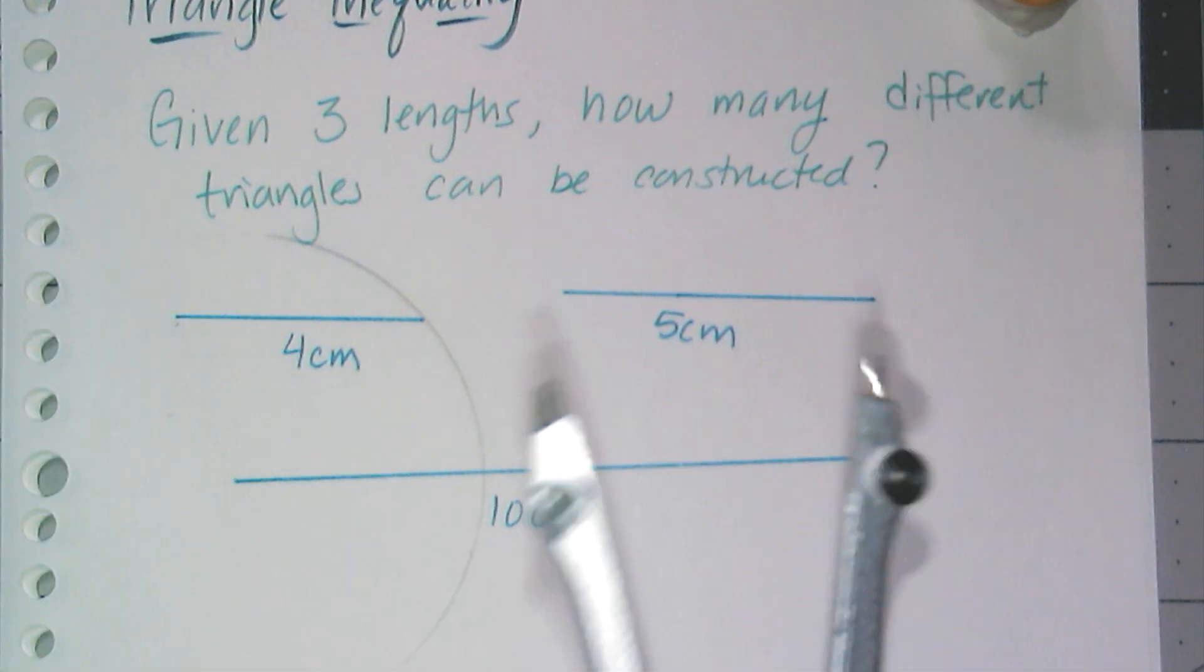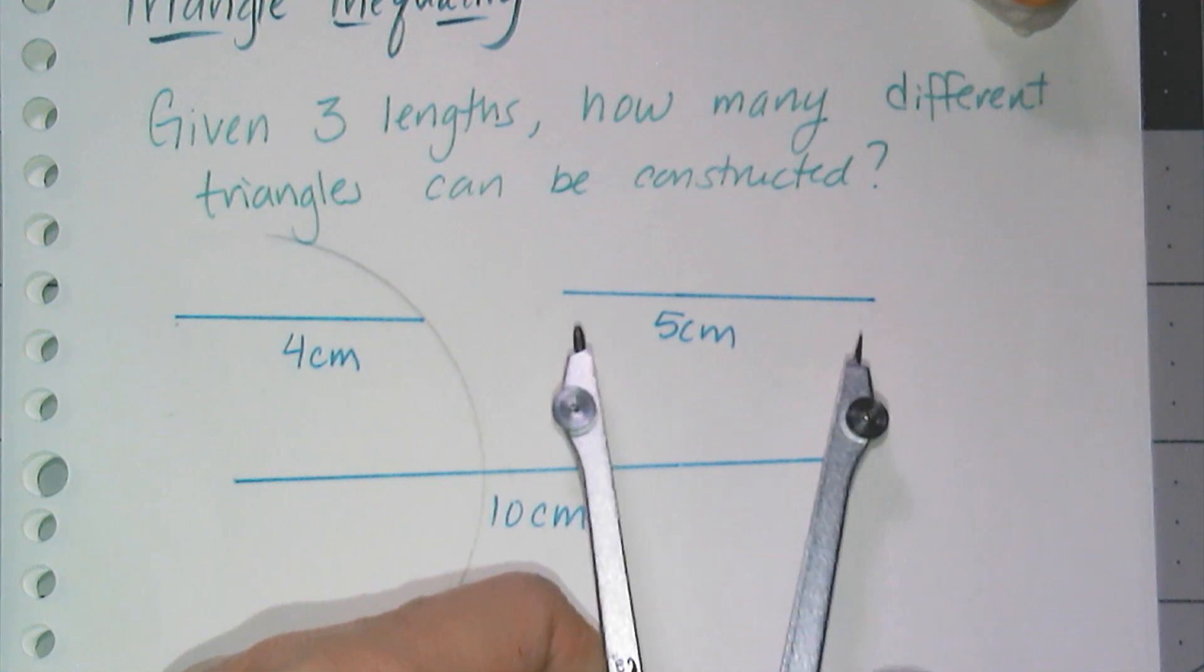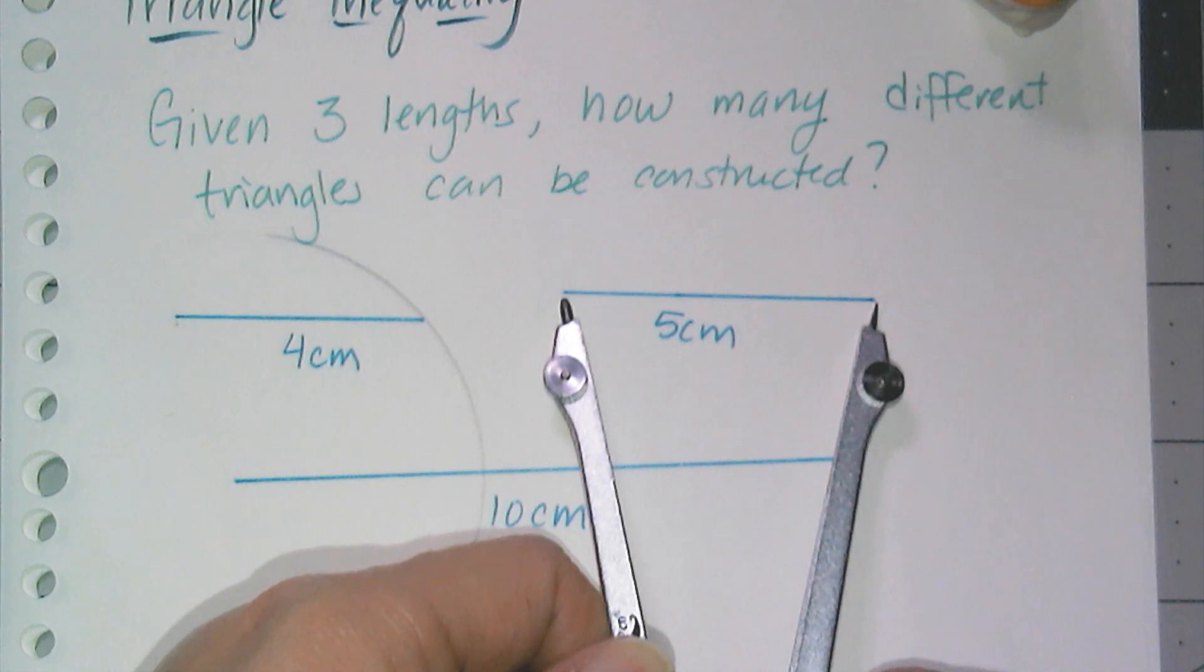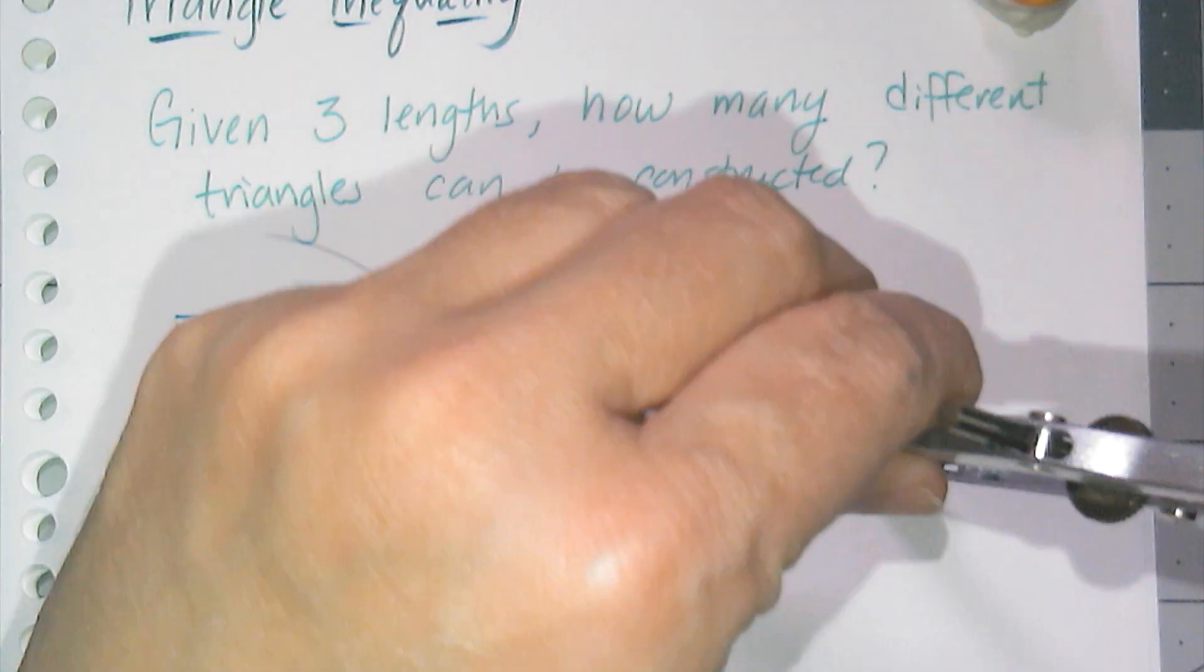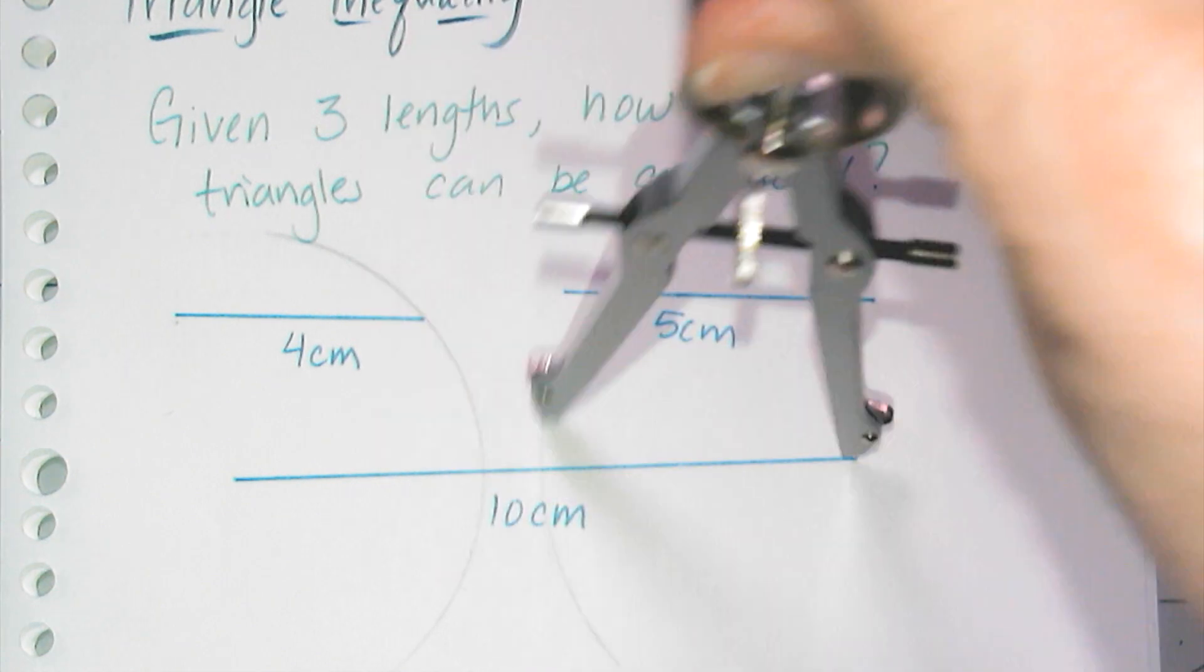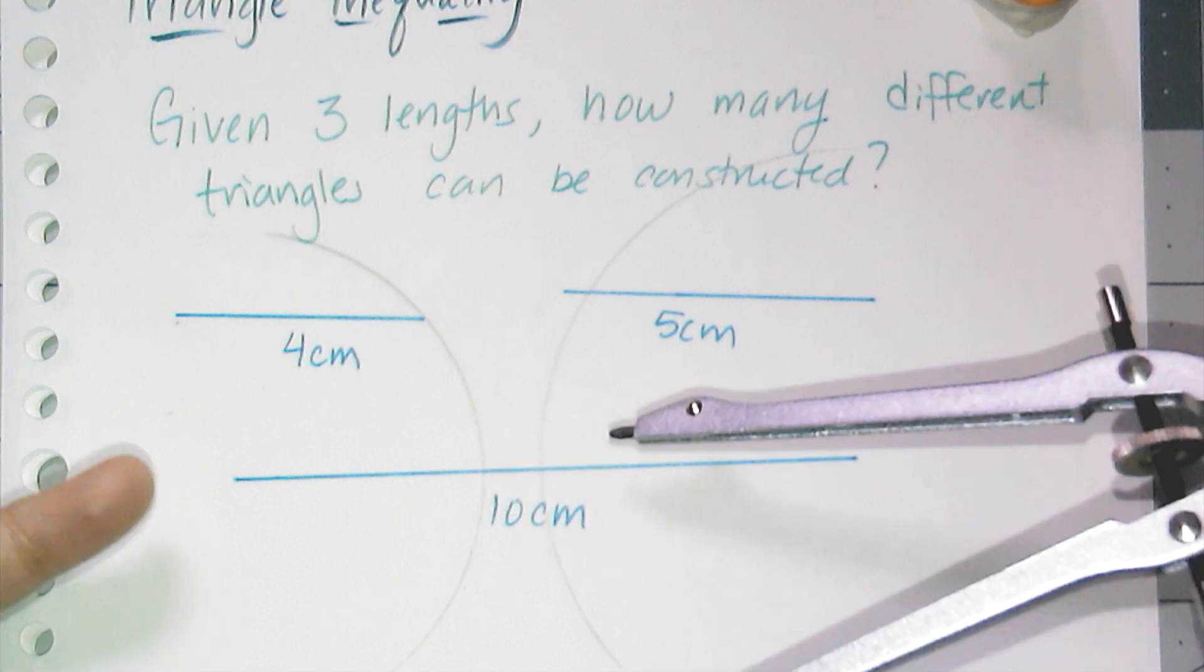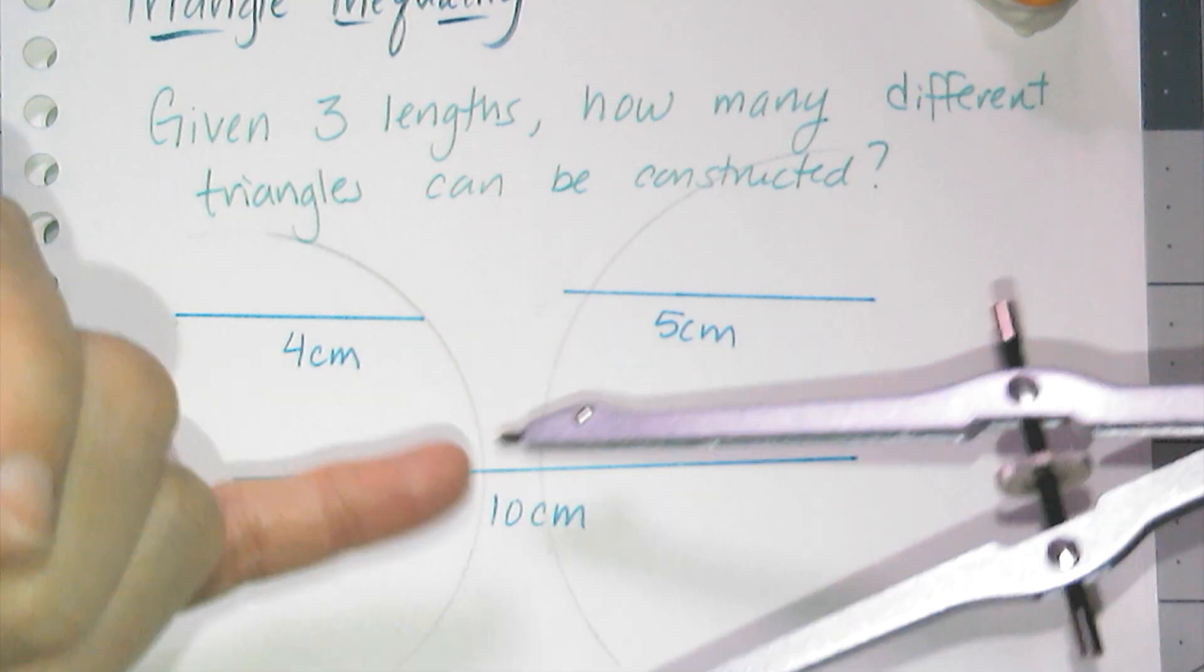Then I'm going to adjust my compass to match the second line segment and where these two arcs intersect is going to be the location of my third vertex. So when I put the compass point on the end and swing the arc, oh no, I have an epic fail because these two points, these two line segments, aren't long enough to actually intersect.